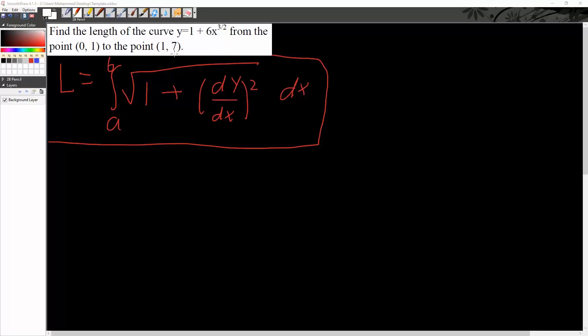This is essentially finding arc length, and the arc length formula is something like this. And so for us, since we're doing y equals something in terms of x, we know it's going to be in terms of dx.